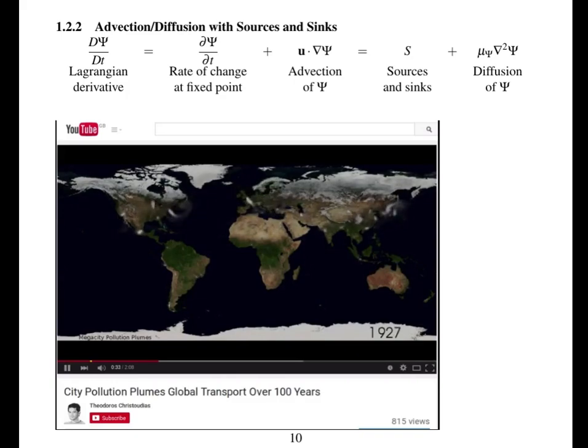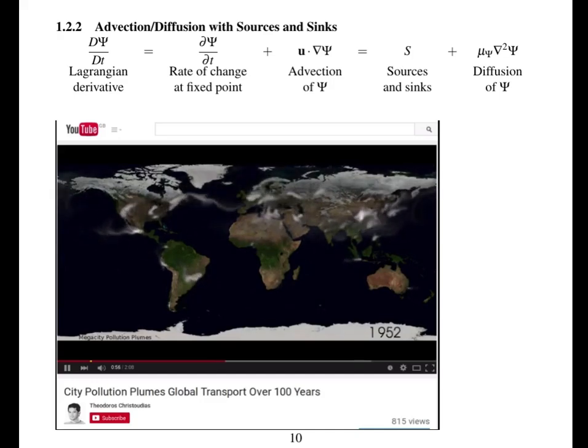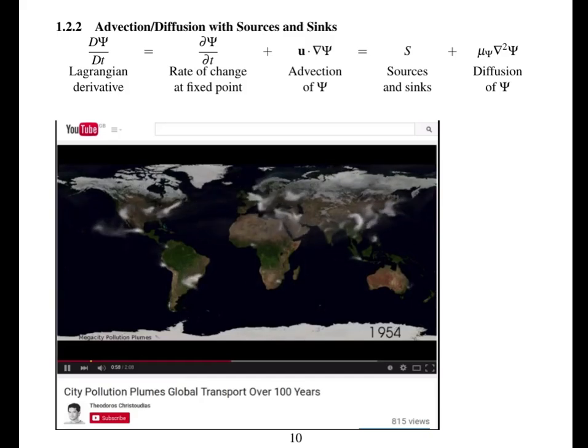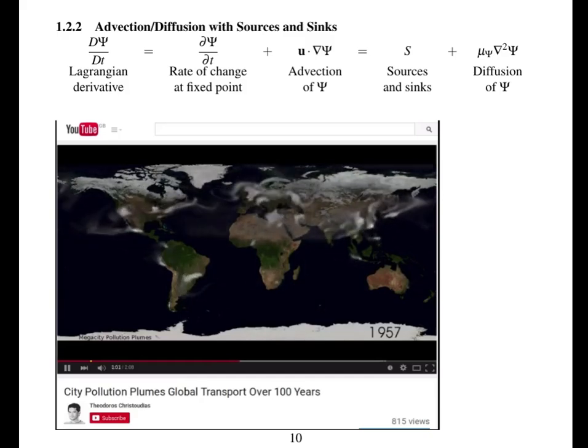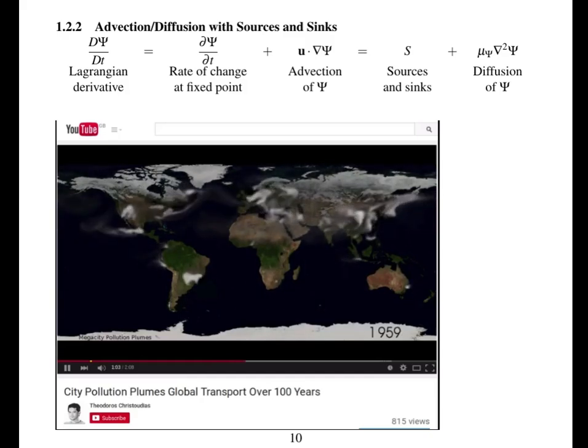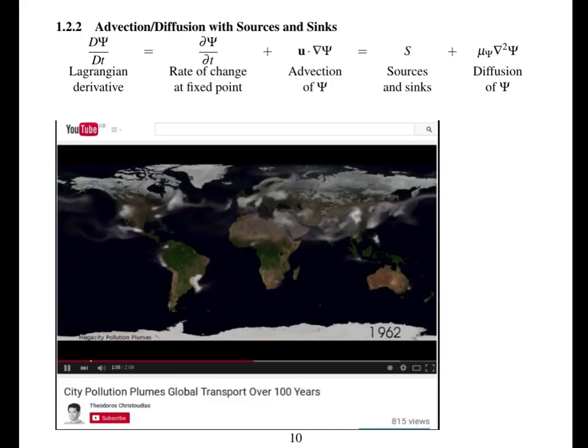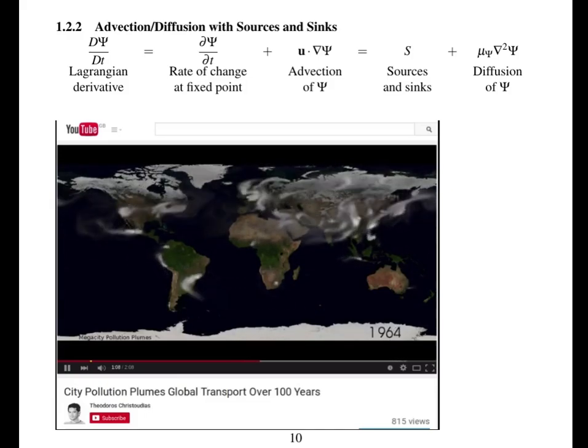So you can see that there are sources and sinks. There are sources of pollutant where you have cities. And then there are sinks because the pollutants are washed out by the atmosphere. And then the pollutants are moved around by the wind and also diffused. So we're coming up to the 1950s now. There are more and more sources of pollution, all getting mixed around, but it doesn't last forever. They do get washed out.